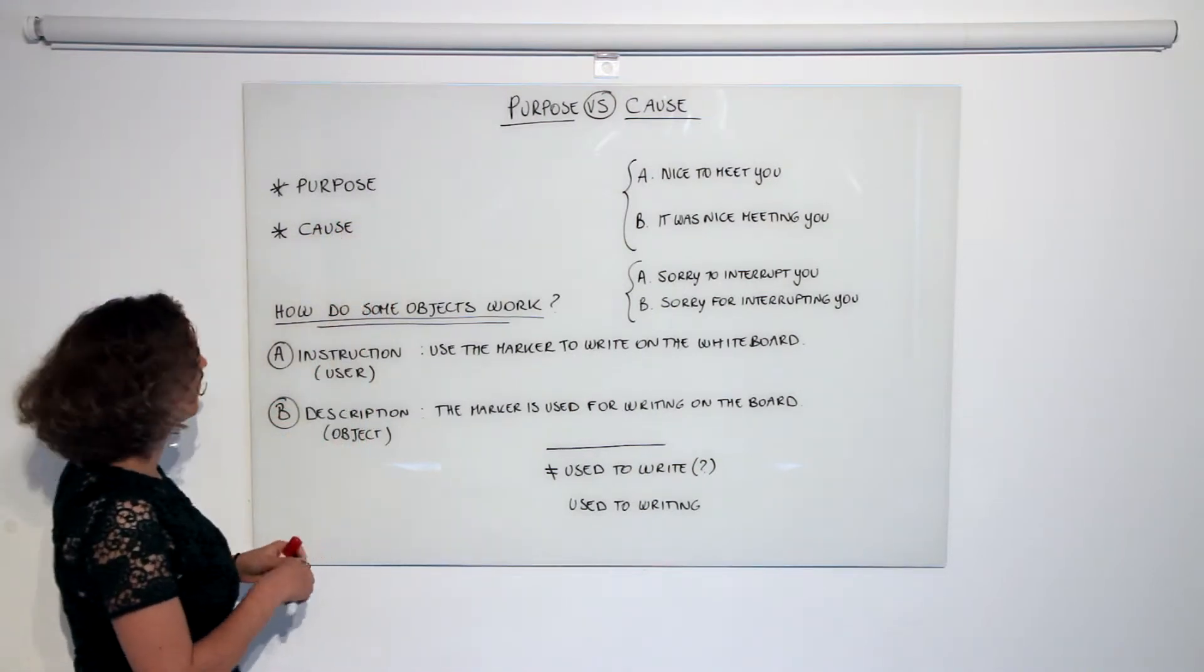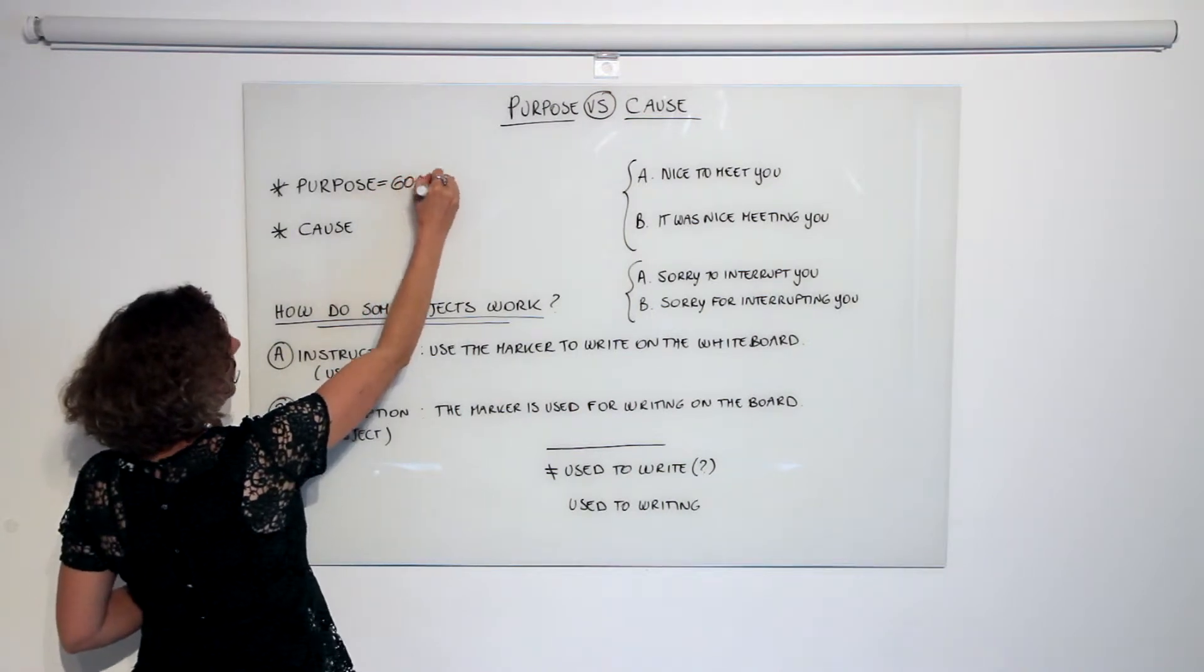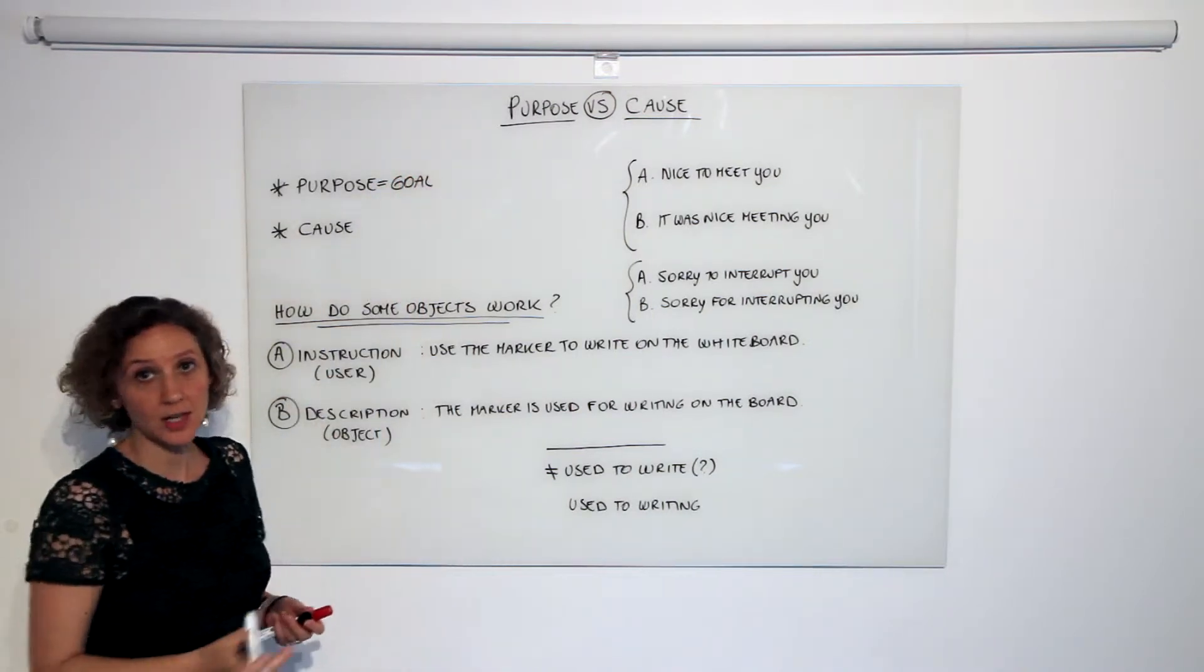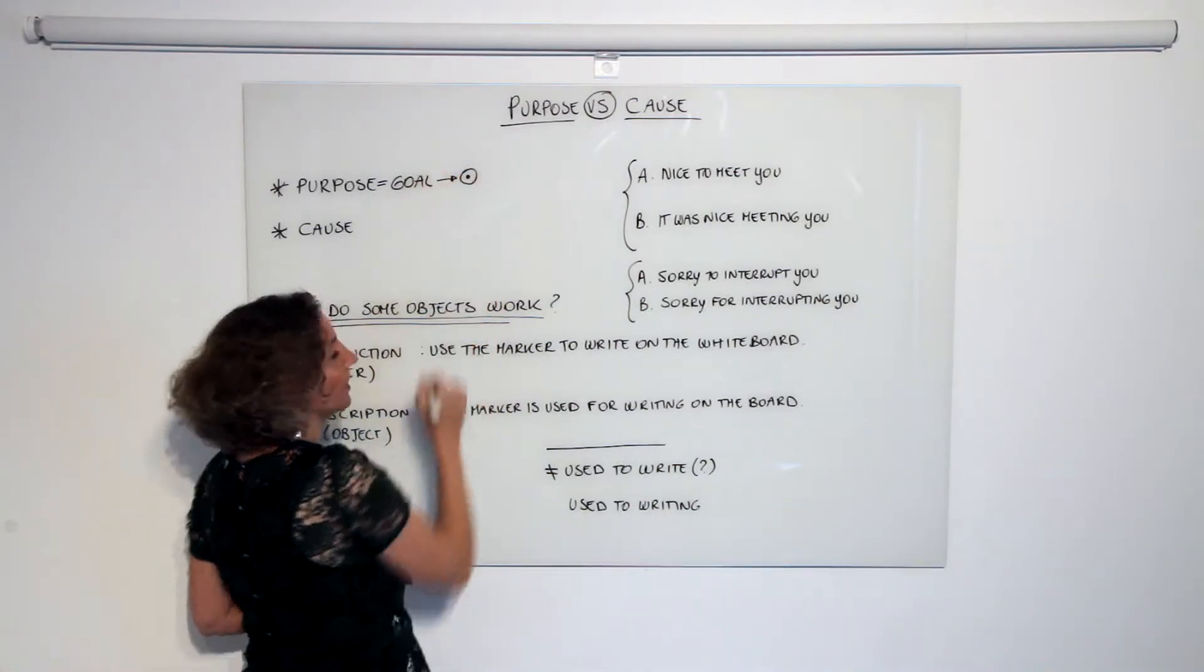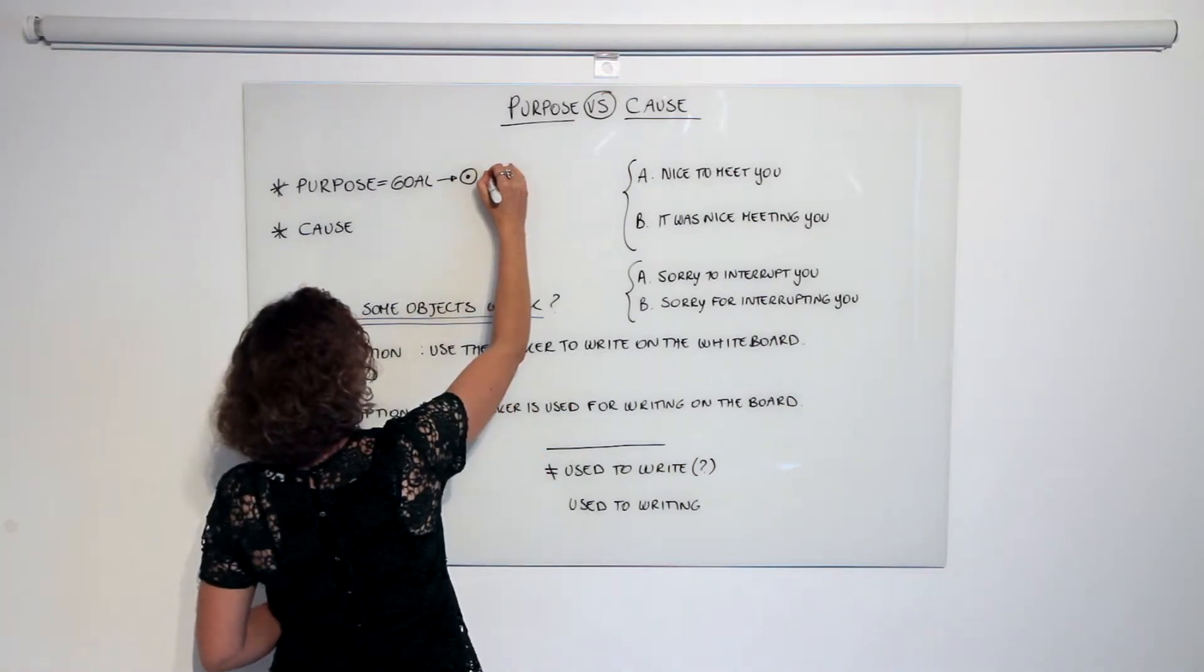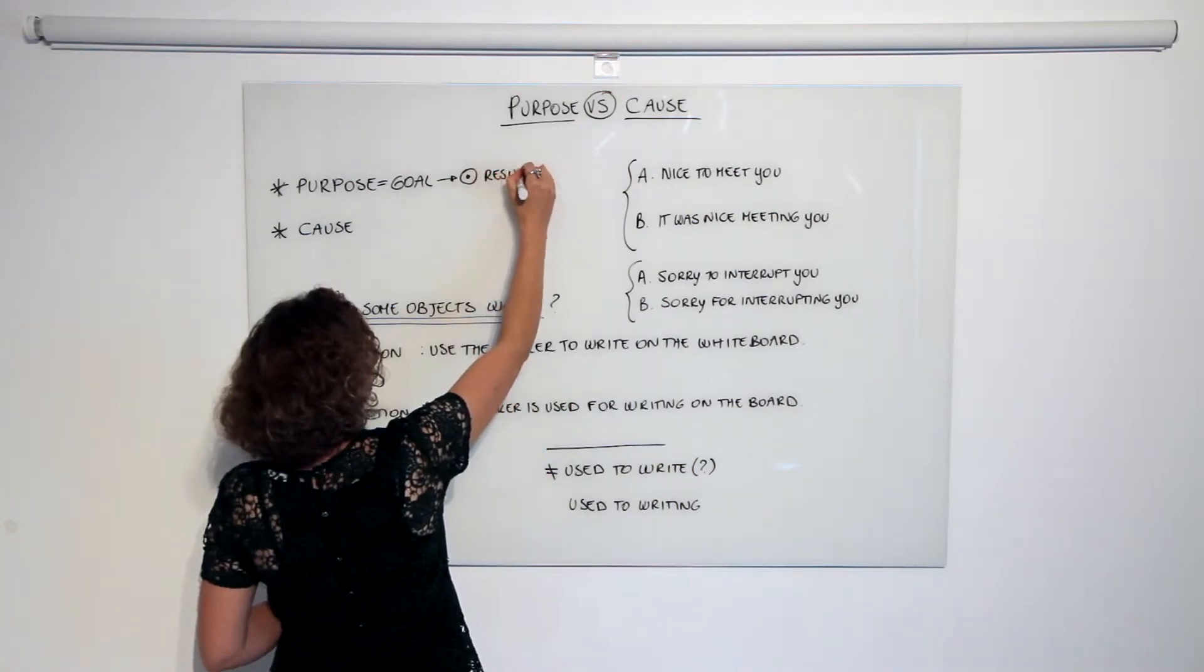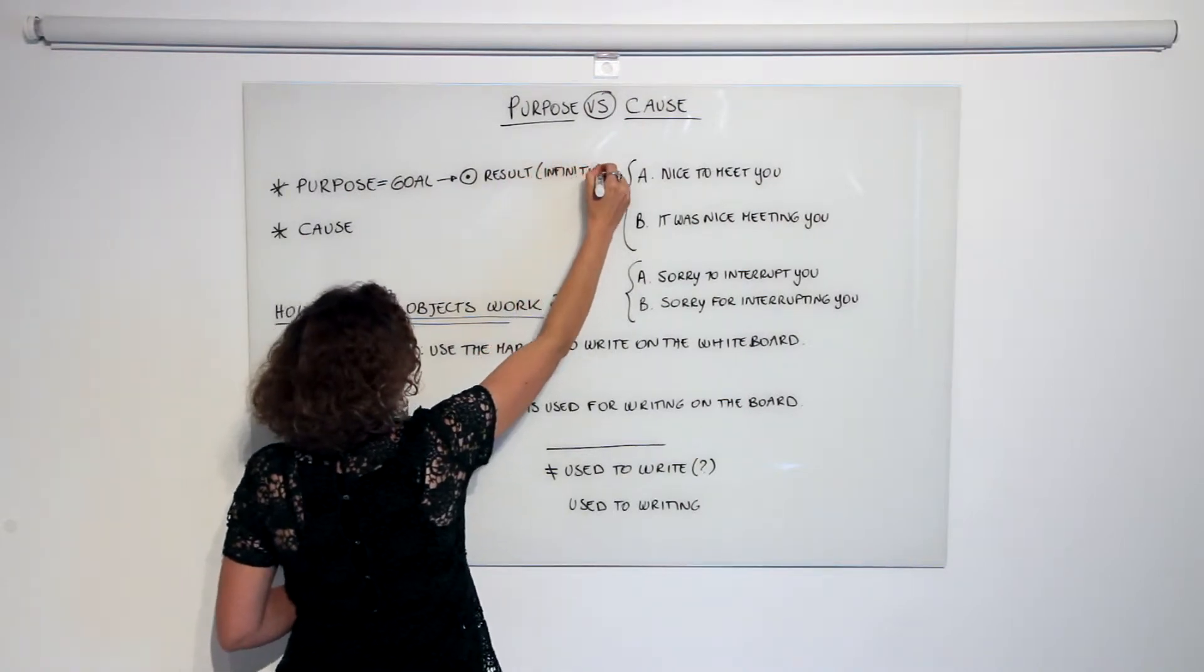The purpose per se is a goal that I pursue and as such it is viewed as a result that I wanted to achieve. So that's why we tend to use the infinitive to express it, just like we explained last time.